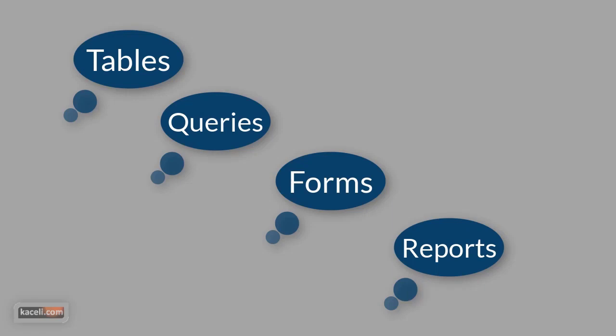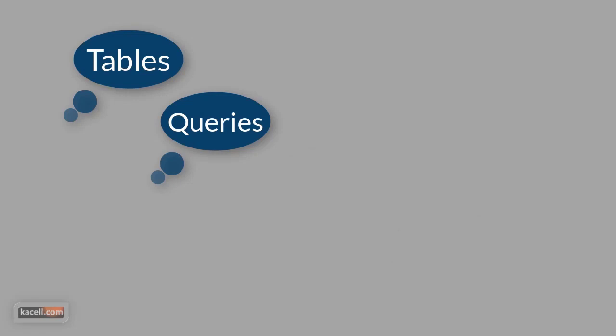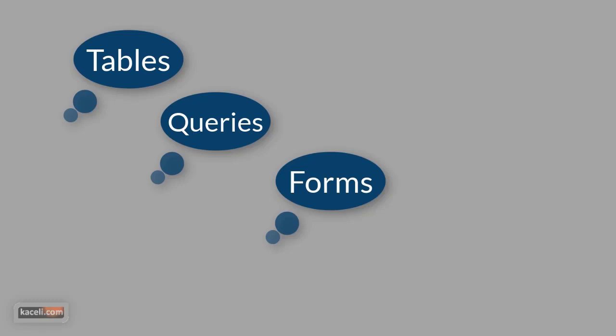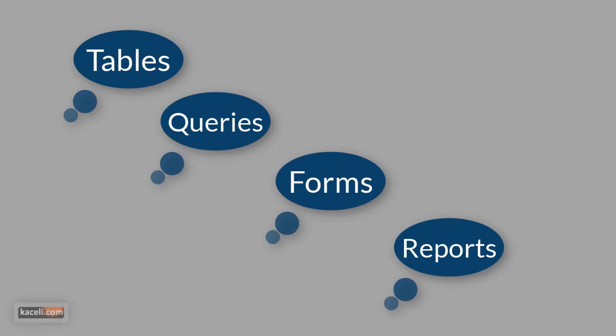Tables are where the data is stored within the database. Queries retrieve specific data from the tables or other queries and display only the data that you specify — for example, just the first name, last name, and email address. Forms are used to enter new records in a table — that's the data entry component — and to edit or delete existing records. Usually data is not entered directly into the table but through the forms. Reports summarize fields or records from a table or query in an easy-to-read format — for example, a printout you give to your manager for the sales of that day.